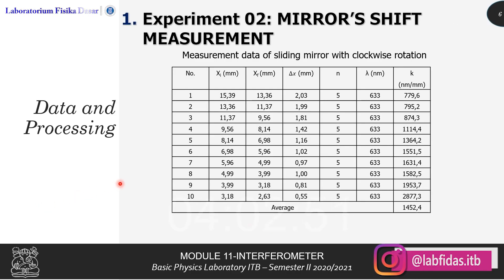In this module, we're actually going to do two experiments. However, the first experiment is only about setting up the instruments needed, so we are only going to talk about the data and processing for experiment number two, the mirror's shift measurement. The shift measurement will be done in two different conditions: the first one is the measurements of data of the sliding mirror with clockwise rotation of the micrometer screw gauge, and the second one is with counterclockwise rotation.